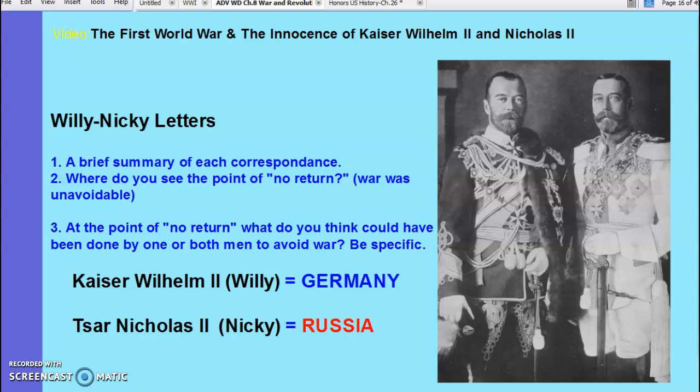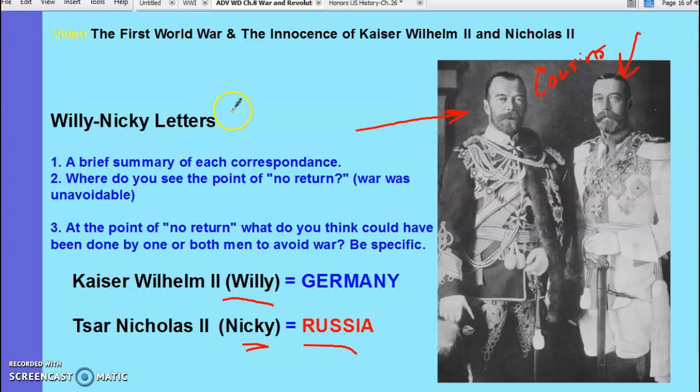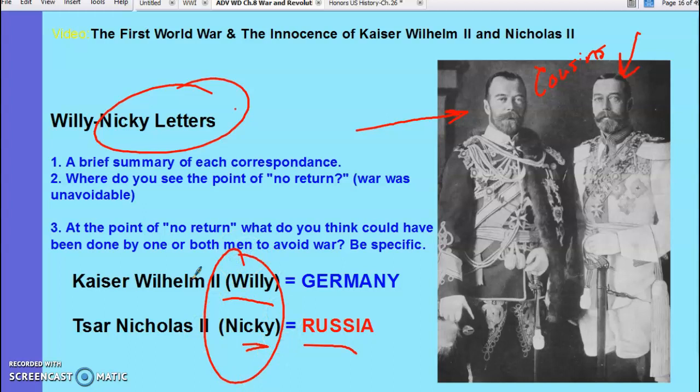If you're interested, you can look up Kaiser Wilhelm II and Tsar Nicholas II of Russia — their nicknames for each other were Willy and Nicky. These guys were cousins. They literally have telegraphs going back and forth, called the Willy-Nicky letters. These two cousins grew up together, attending the same weddings, funerals, birthdays — they were actually quite close. There's a set of telegraphs of them going back and forth trying to avoid war, because they were on opposite sides of the alliances.